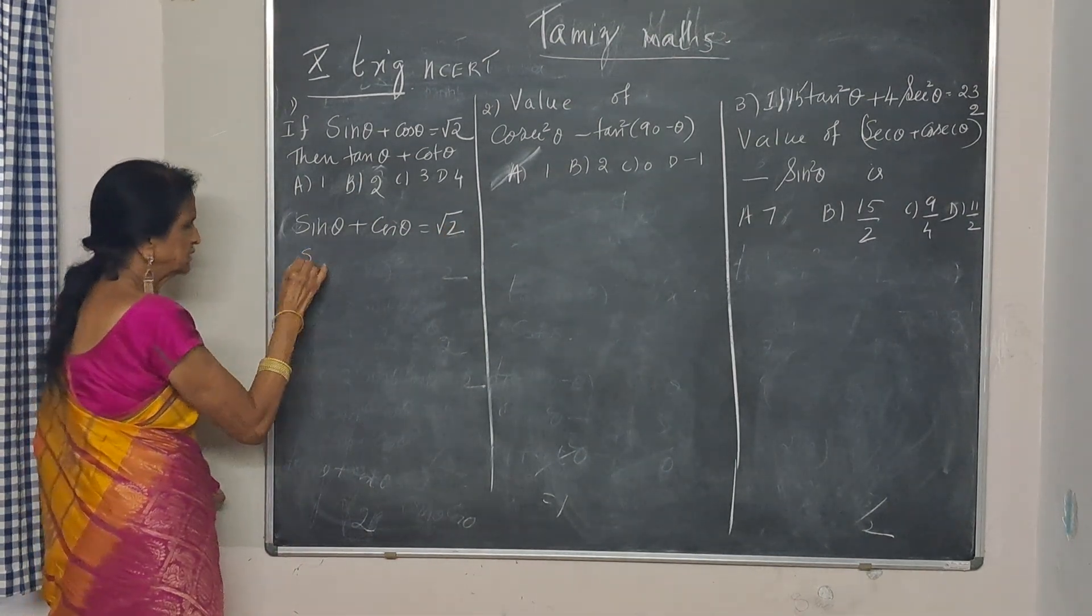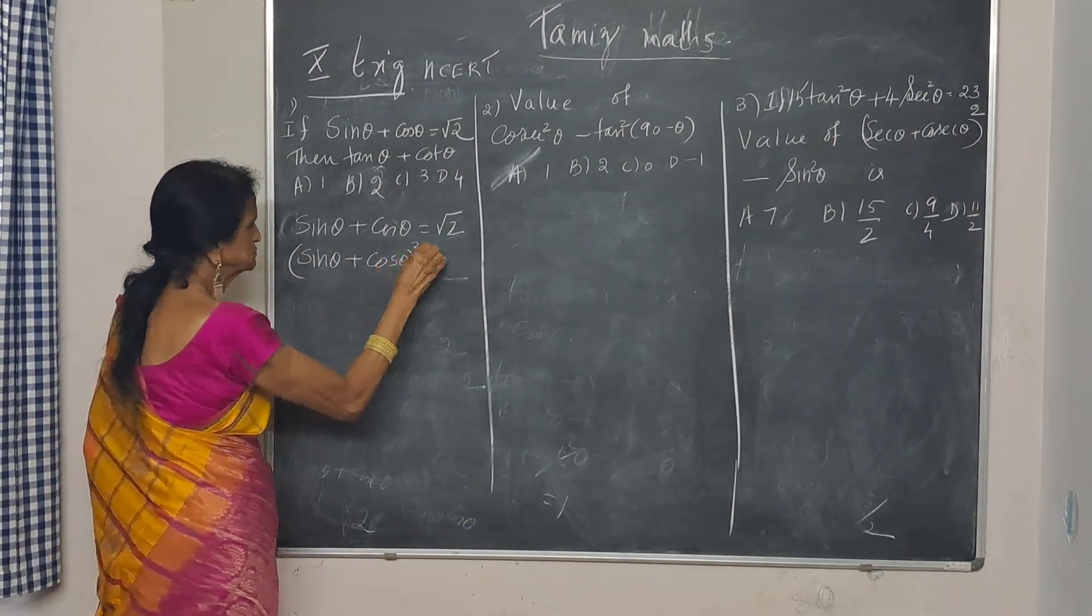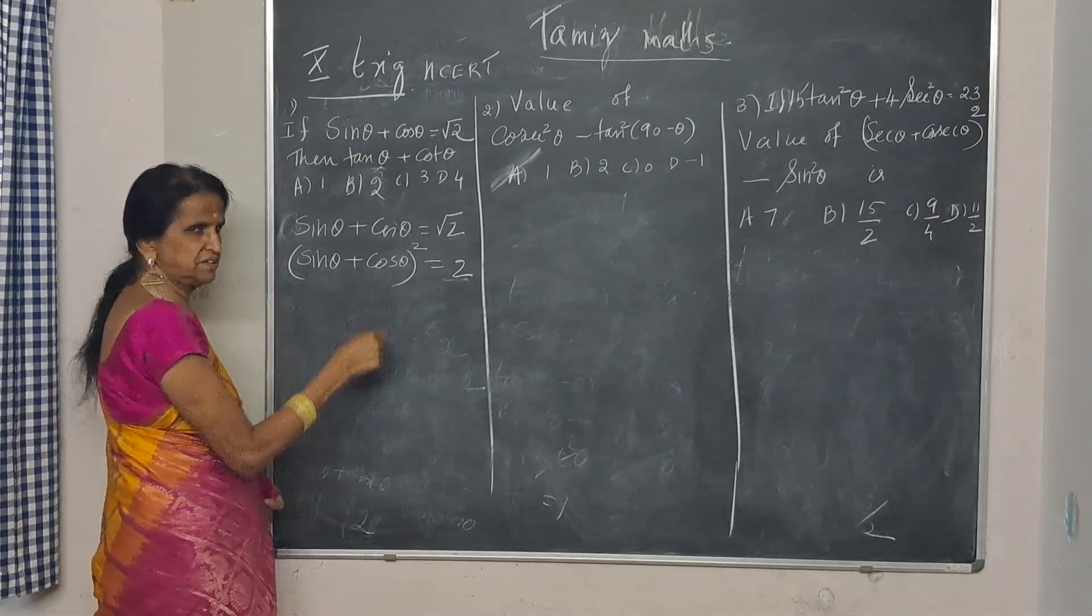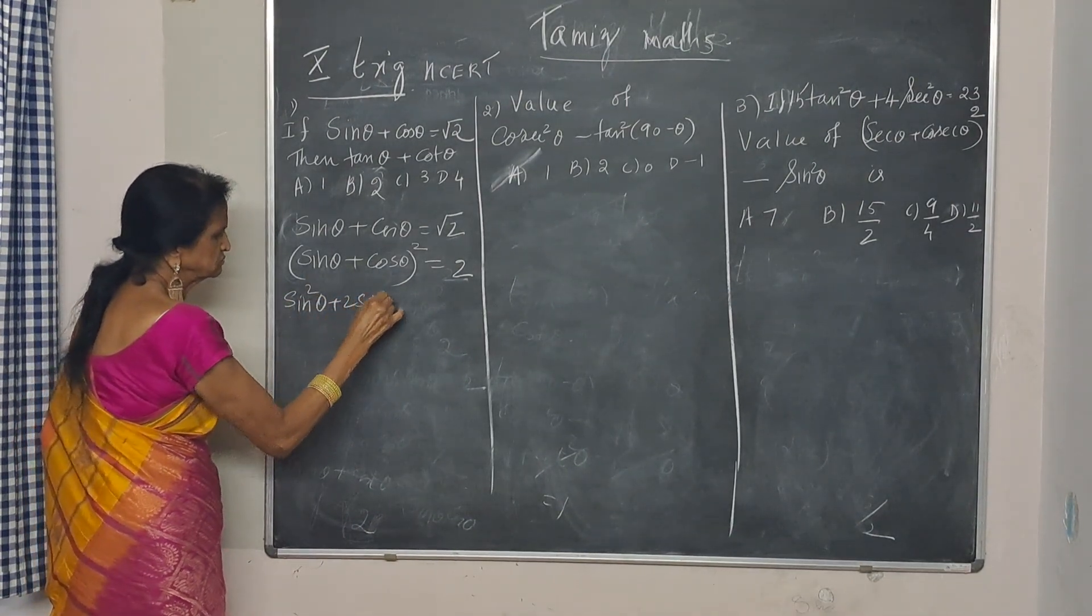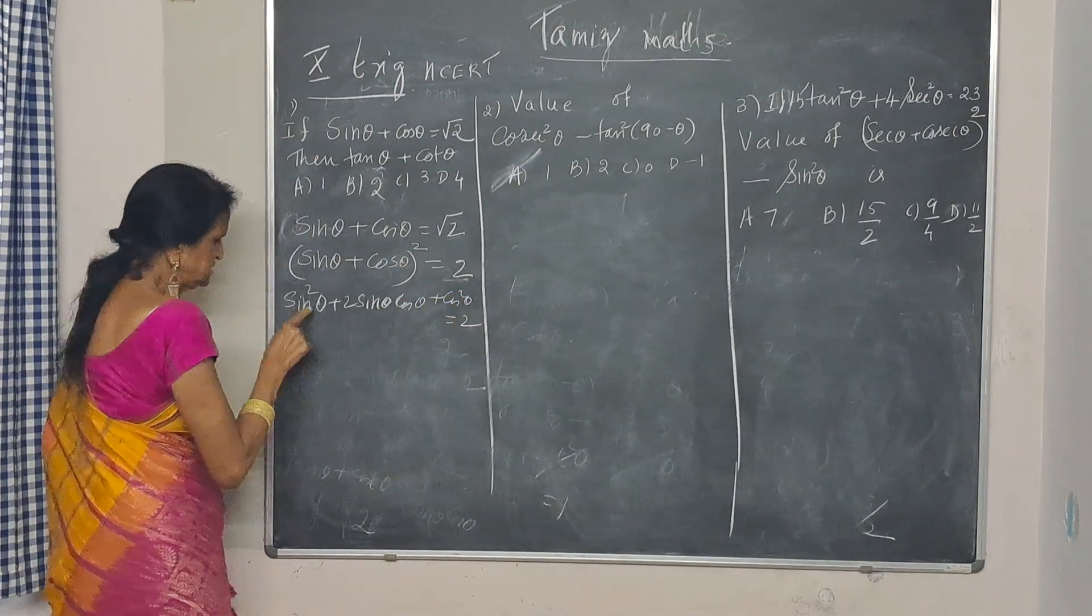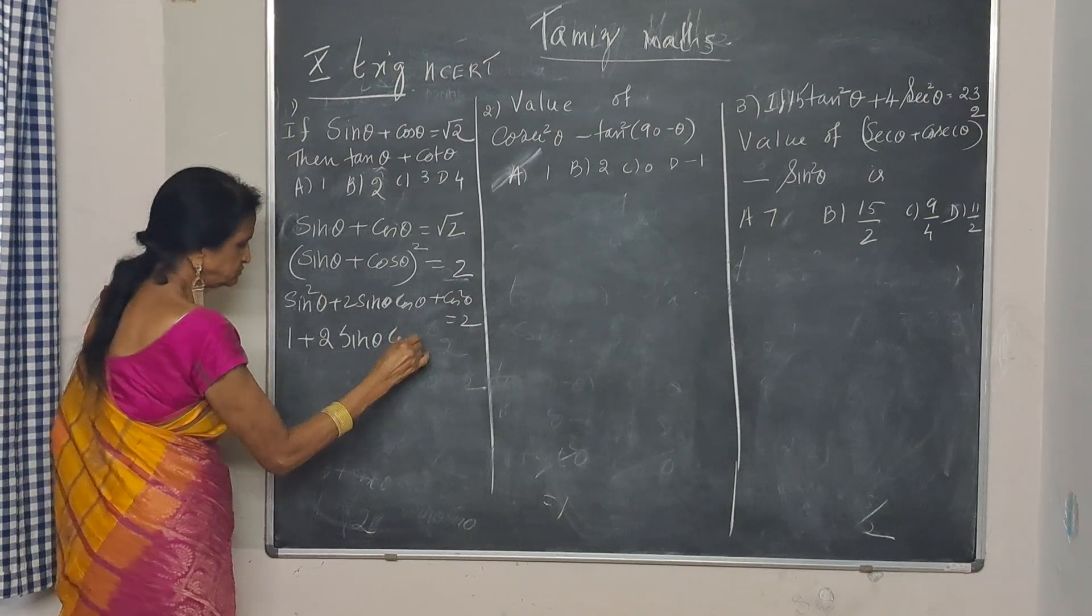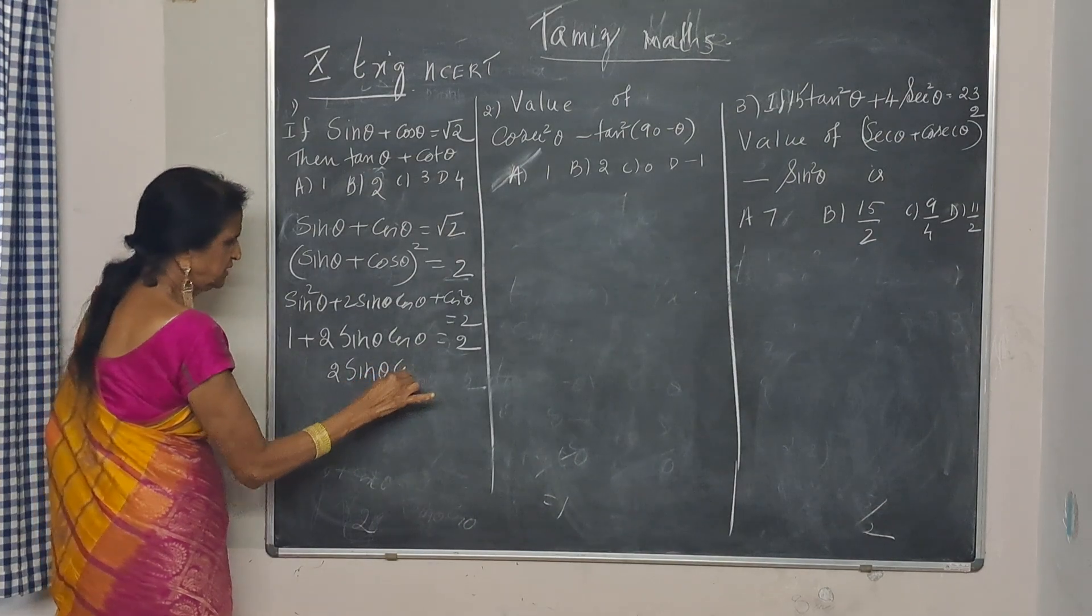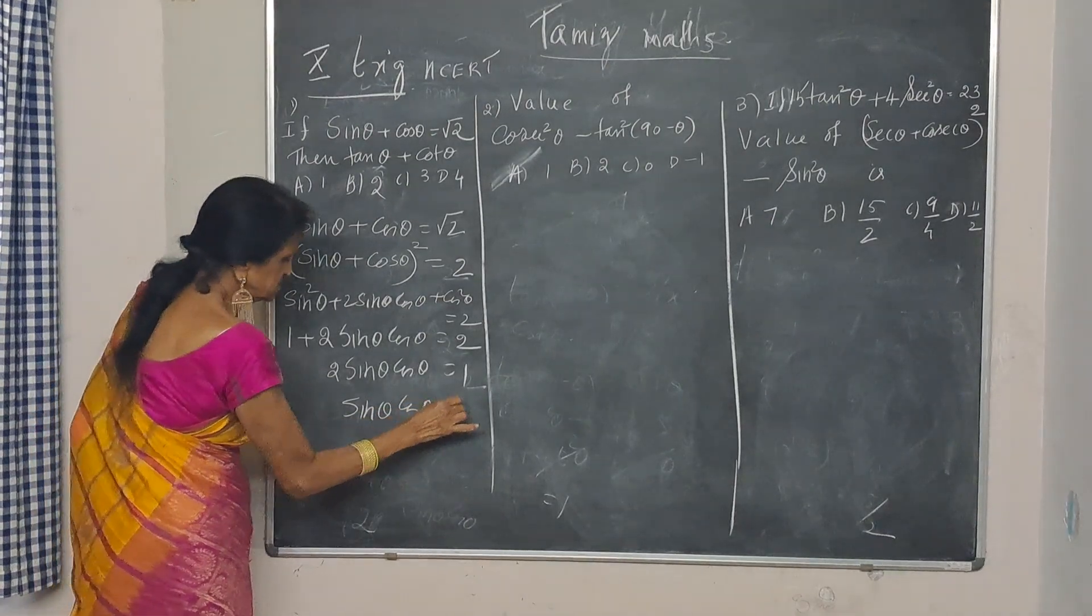Squaring both sides, we get sin square plus 2 sin theta cos theta plus cos square. Using A plus B whole square, sin square plus cos square equals 1. So, 2 sin theta cos theta is 1. Sin theta cos theta is 1 by 2.